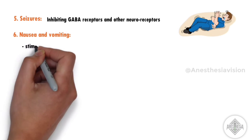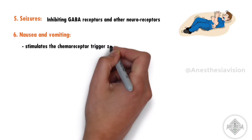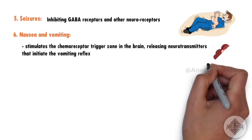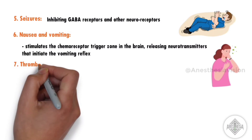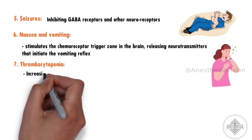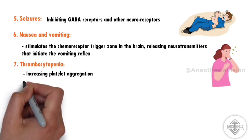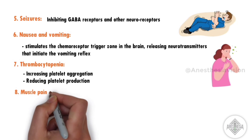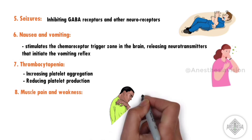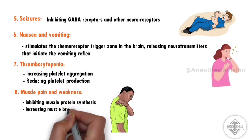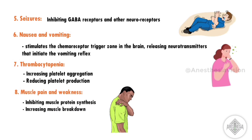Nausea and vomiting: Tranexamic acid stimulates the chemoreceptor trigger zone in the brain, releasing neurotransmitters that initiate the vomiting reflex. Thrombocytopenia: Tranexamic acid may cause thrombocytopenia by increasing platelet aggregation and reducing platelet production, which may affect bone marrow function. Muscle pain and weakness: Tranexamic acid may cause muscle pain and weakness by inhibiting muscle protein synthesis and increasing muscle breakdown.